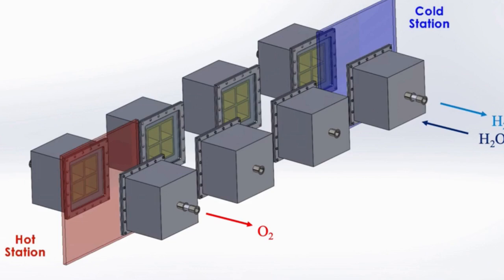But so far, existing STCH designs have limited efficiency. Only about 7 percent of incoming sunlight is used to make hydrogen. The results so far have been low-yield and high-cost.